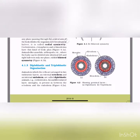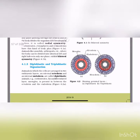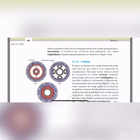Germinal layers: we have three — ectoderm, endoderm and mesoderm. If the organism is diploblastic, it has only two germ layers, with a gel-like mesoglea between ectoderm and endoderm. If the organism is triploblastic, then we have ectoderm, mesoderm and endoderm. Those animals in which the developing embryo has three germinal layers — with mesoderm between ectoderm and endoderm — are called triploblastic animals. Example: Platyhelminthes to chordates are triploblastic.